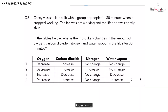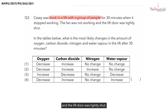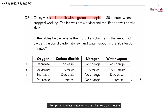Question 3. Casey was stuck in a lift with a group of people for 30 minutes when it stopped working. The fan was also not working and the lift door was tightly shut. In the table below, they asked: what is the most likely change in the amount of oxygen, carbon dioxide, nitrogen and water vapour in the lift after 30 minutes?